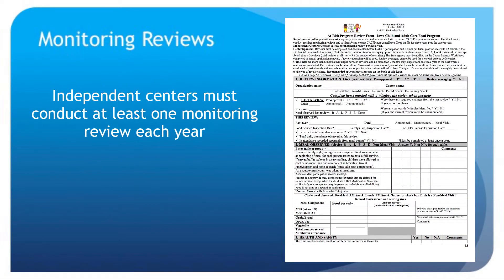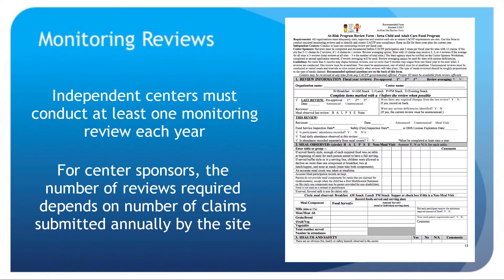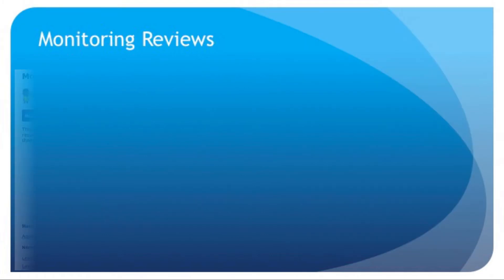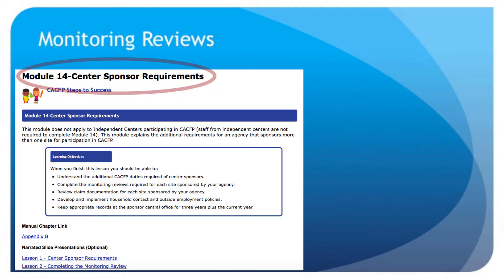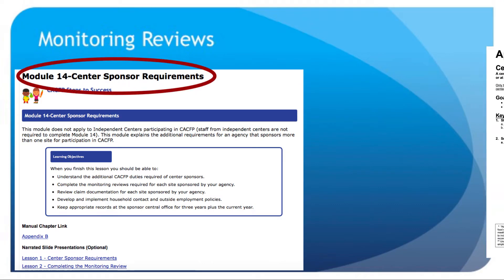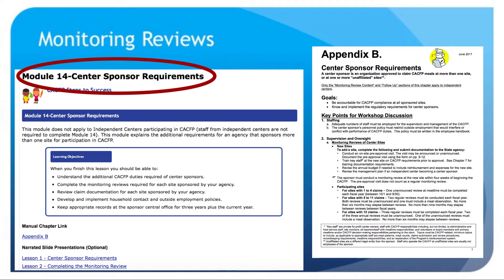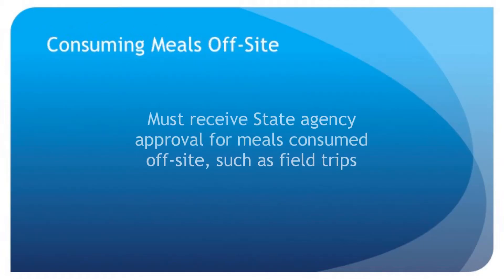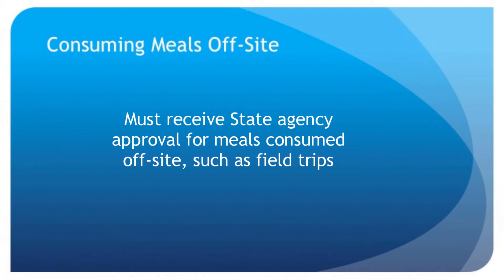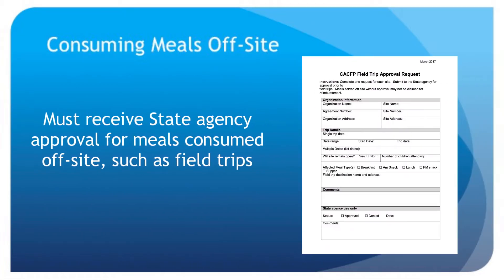Independent centers must conduct at least one monitoring review per year. For center sponsors, the number of reviews required depends on the number of claims submitted annually by the site. Monitoring requirements are covered in Module 14 and Appendix B of the CACFP manual. Organizations must receive state agency approval for meals consumed off-site, such as field trips. A CACFP field trip approval request form can be found in Appendix D.